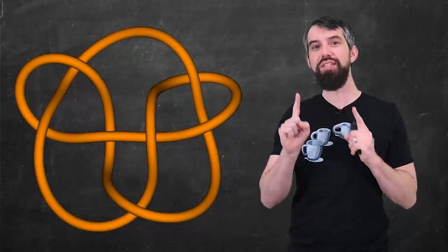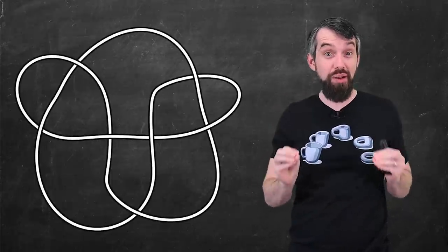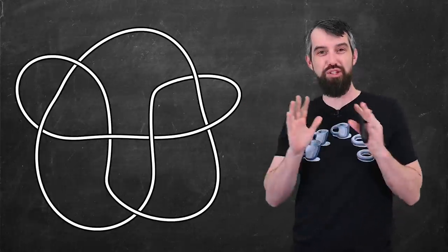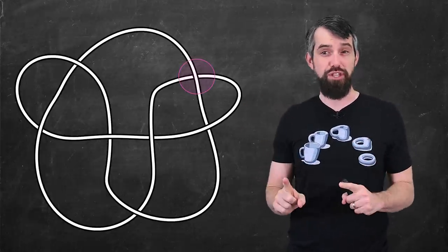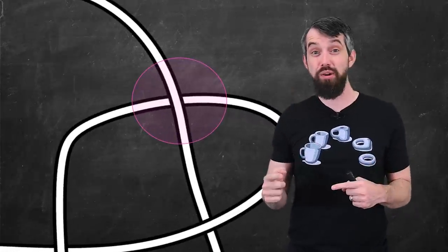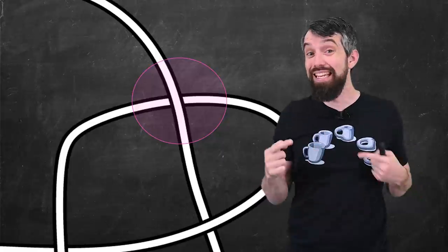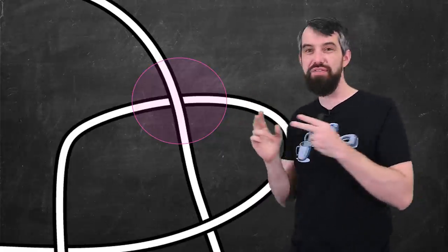But otherwise I can maneuver it like you'd imagine with an actual piece of rope. Then a knot diagram is a projection of this three-dimensional knot down into a two-dimensional plane like this one, where it's not quite a projection because if I take any crossing and zoom in on it, then I want to be clear about which portion of the rope is on the top and which portion is on the bottom.